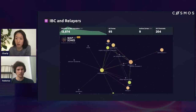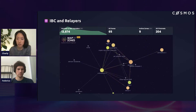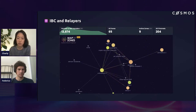On the right, you can see all channels — there are 204 channels, and we'll go into what a channel is a little bit later. But basically each zone is connected through IVC, and that's how messages and assets and tokens are passed across.